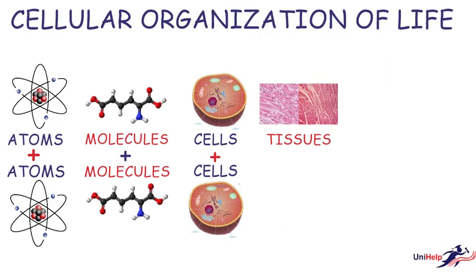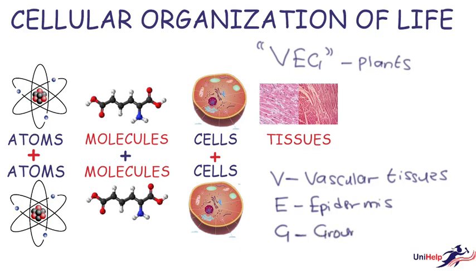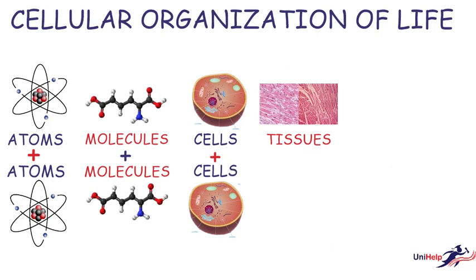Now let's look at the three basic tissue types in plants, which can be remembered as VEG: V stands for the vascular tissues, E stands for the epidermis, and G stands for the ground tissues.